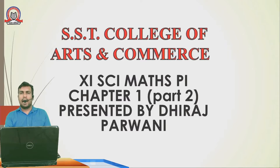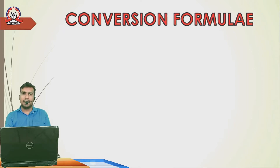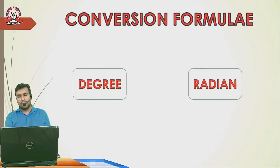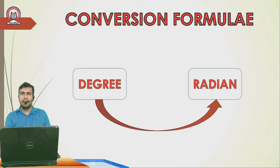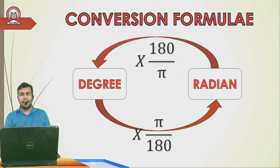That was Chapter 1: Angles and their Measurement. Today we will do a continuation — Part Two. Let's give a quick revision of what we discussed earlier. In Angles and their Measurement, we studied a new mode: Radian. You already knew Degree mode. Now we learned Radian. The conversion formula: to go from Degree to Radian, multiply by π/180; from Radian to Degree, multiply by 180/π.